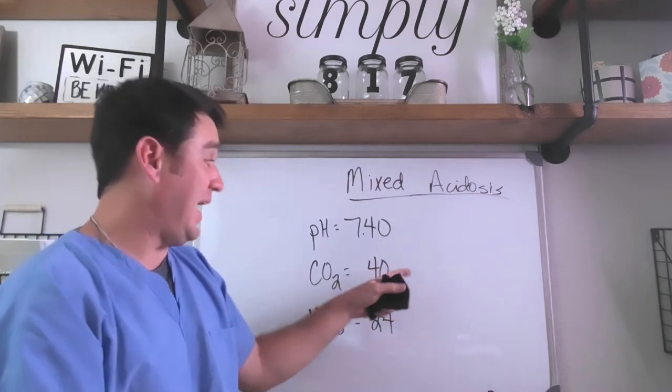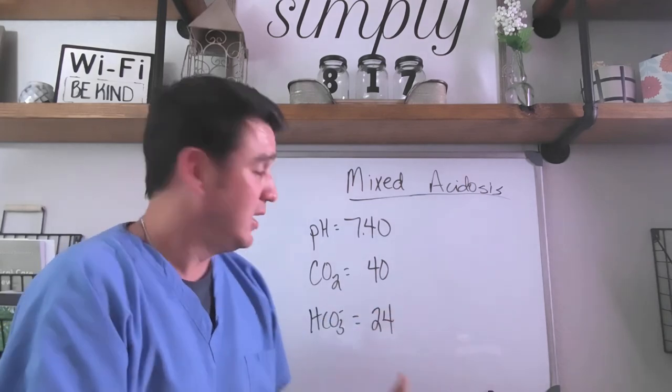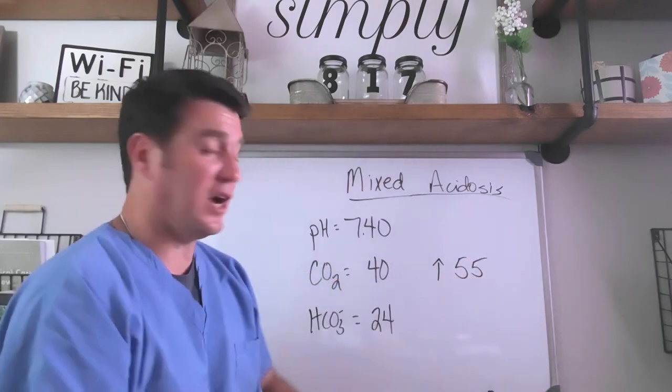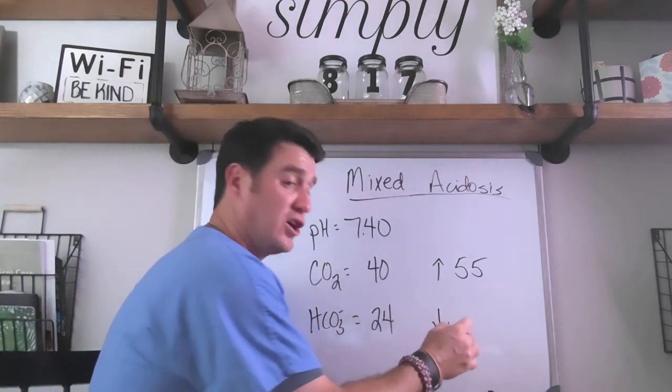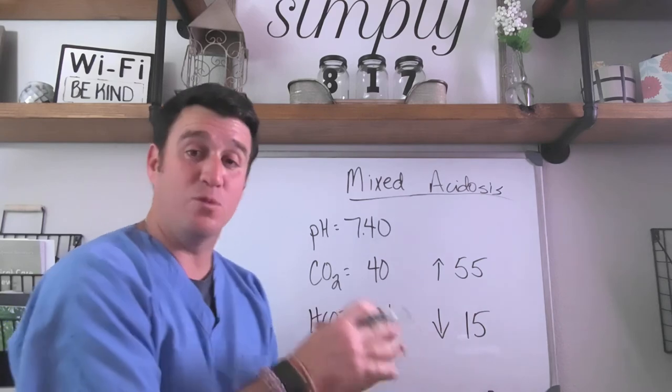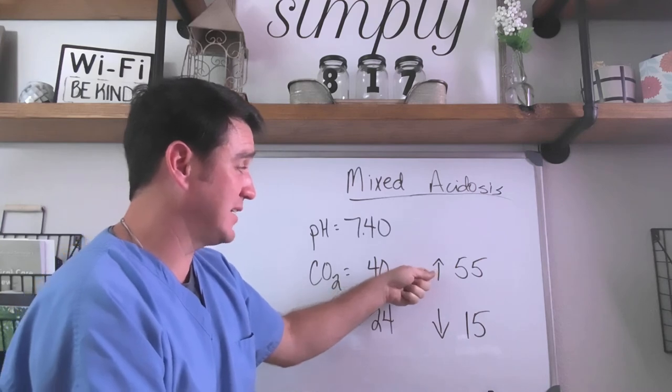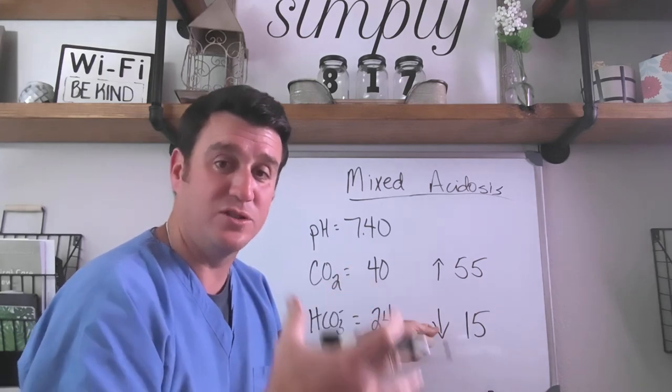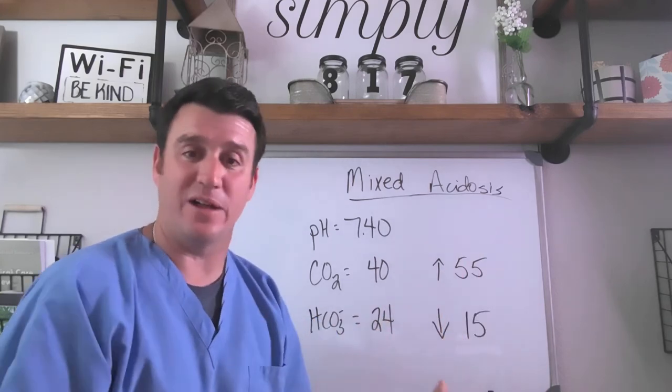An acidosis will be caused any time your CO2 rises above normal, outside of the normal range. So, if our CO2 goes up to 55, this will cause a respiratory acidosis. Any time our bicarb goes down beneath the normal range, 22 to 26, any time it falls beneath that, it will cause a metabolic acidosis. Now you have a respiratory component causing acidosis with a high CO2 and your metabolic component causing an acidosis with either a loss of bicarb or an increased anion gap or an increased amount of non-volatile acids.